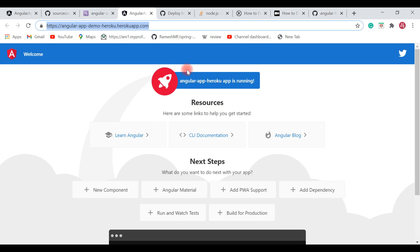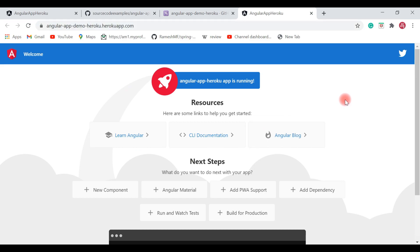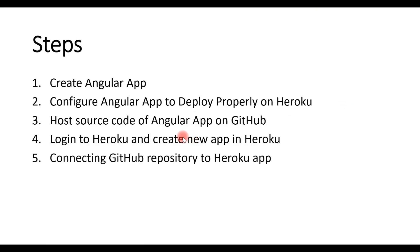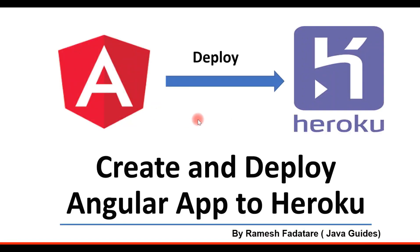To summarize: we created an Angular application, configured it to deploy properly on Heroku, hosted the source code on GitHub, logged into Heroku, created a new app, and used the Connect to GitHub deployment method to deploy it. I hope you found this video useful. Subscribe to my YouTube channel to get notified when I publish new videos. Thanks for watching — see you in the next video!